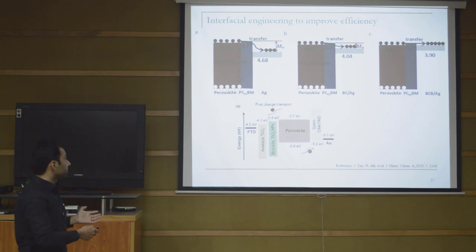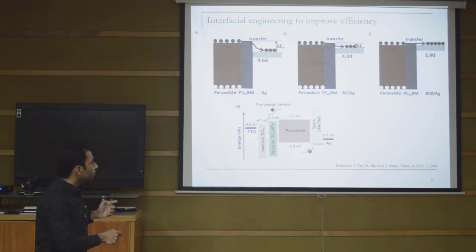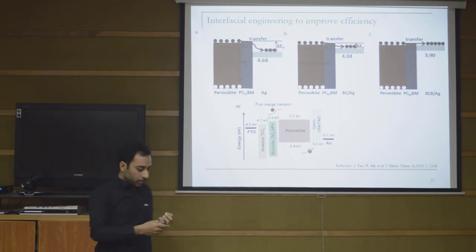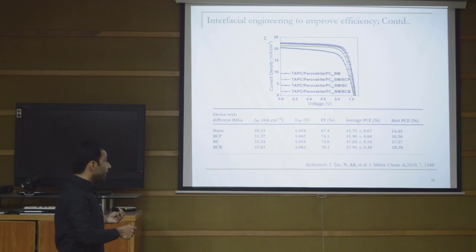Here are some images from our work. When we used PCBM as the electron transporting layer, there was this much energy difference. Then when we combined it with another kind of organic material, the energy difference decreased. When we combined this with another material, the energy difference was almost minimized.